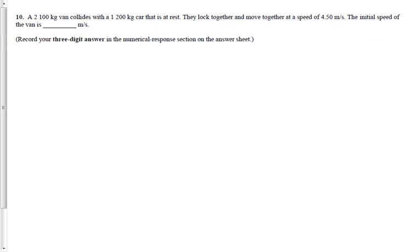What I want to do right now is take a look at a couple of multiple-choice questions. The first one being multiple-choice question number 10 — I'd like you to submit this one to me as numerical response number one on the form on my website. It says: a 2,100-kilogram van collides with a 1,200-kilogram car that is at rest. They lock together and move off at a speed of 4.5. What's the initial speed of the van?